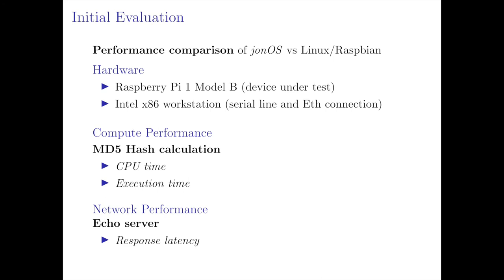To measure the performance of John OS and the Server Kernel architecture, we compared it with Raspbian, a Debian fork adapted to run on Raspberry Pi boards that is widely used. The device used for benchmarking was the Raspberry Pi 1 Model B, and on the client side we used an Intel workstation with serial and Ethernet connections. Since the Server Kernel idea is mainly based on connection to remote devices, we measured both CPU and network performance. For CPU, we measured CPU time — the time the task spends inside the CPU — and execution time, defined as the time between start and end of execution. We used an MD5 hash routine implemented in C as the benchmark. For network measurement, we used an echo server to measure latency.